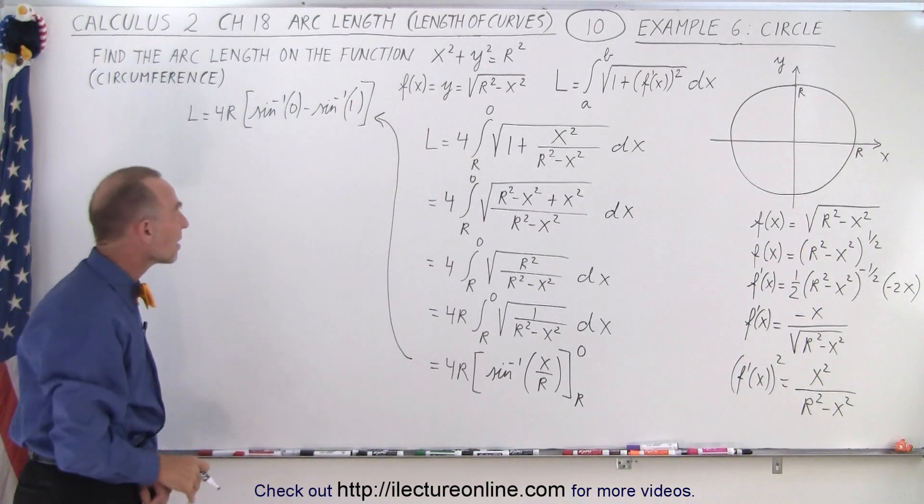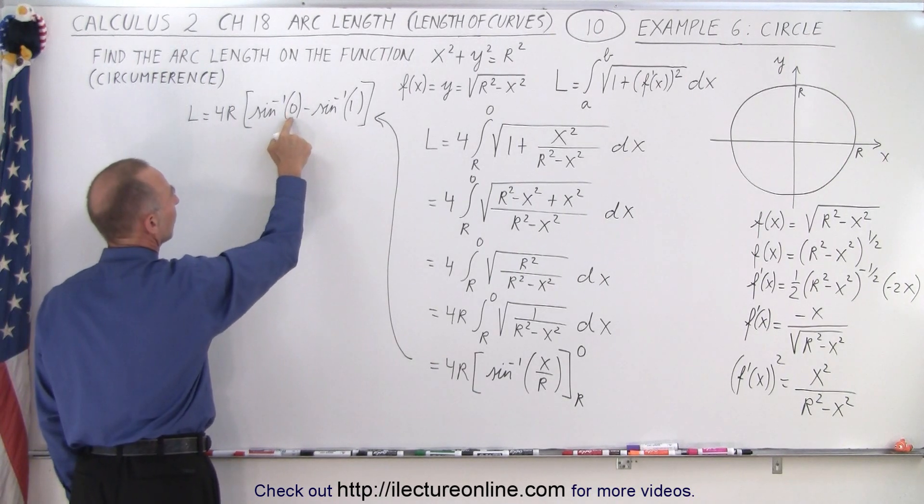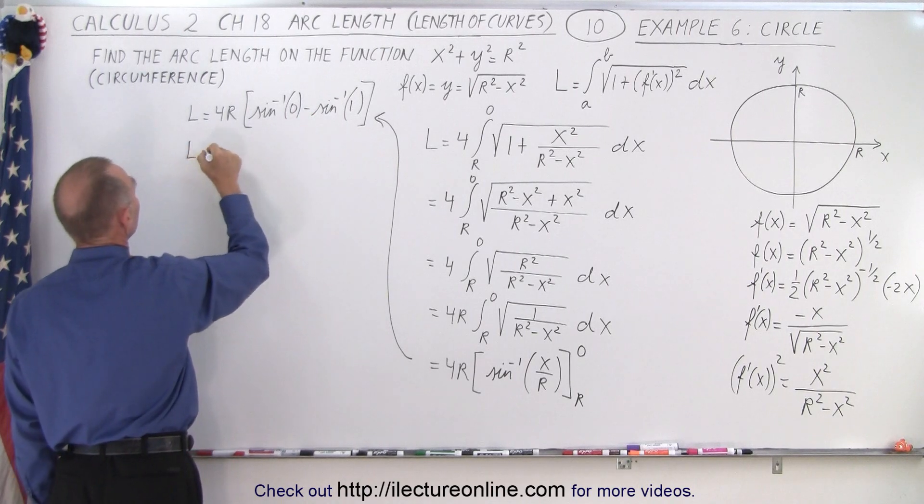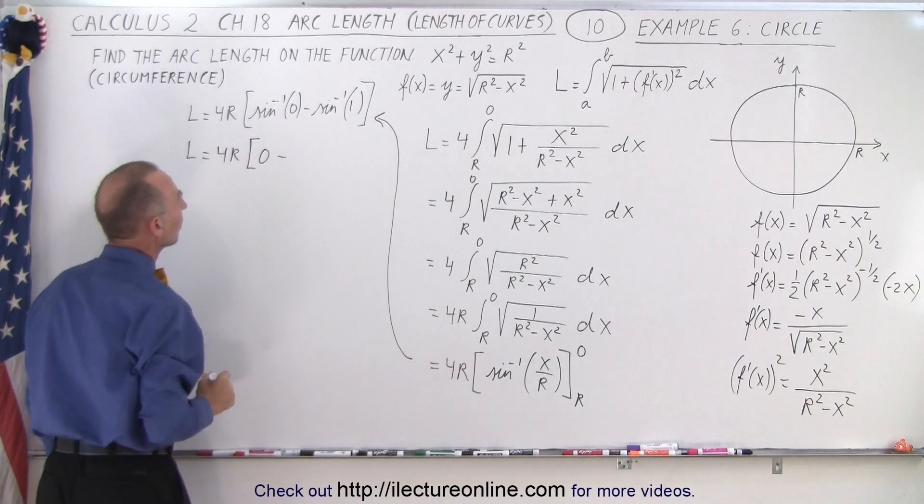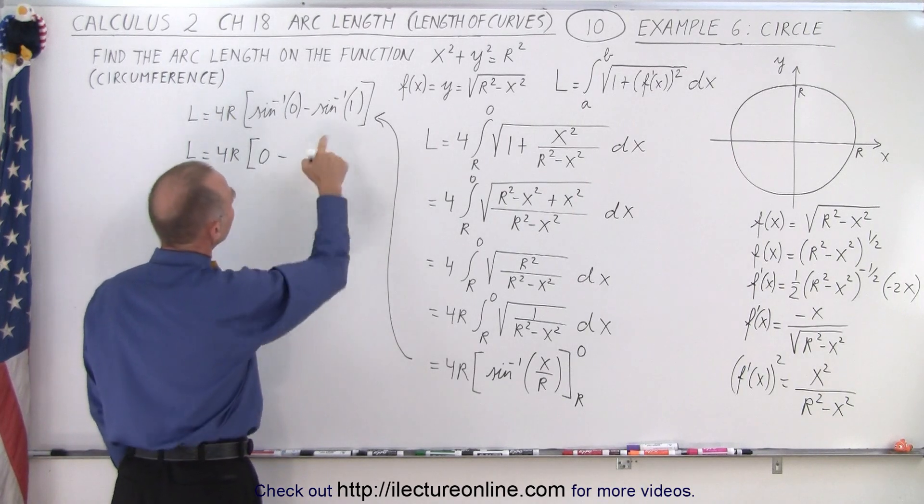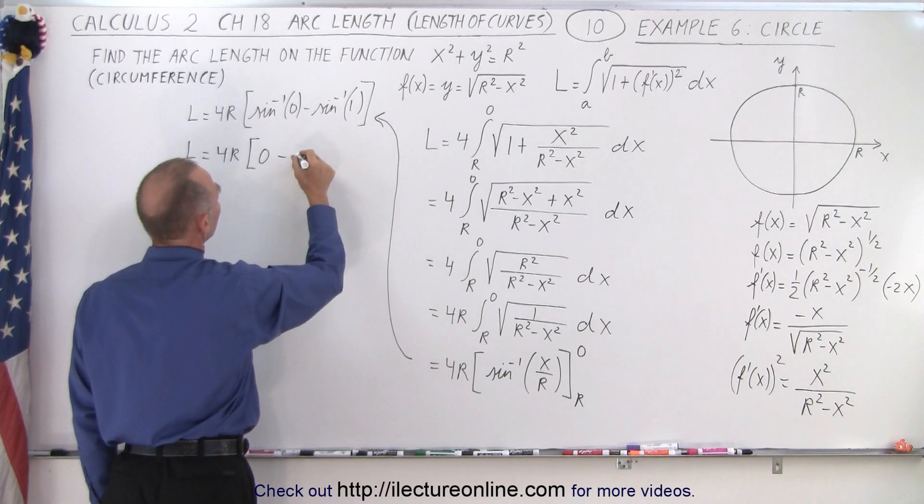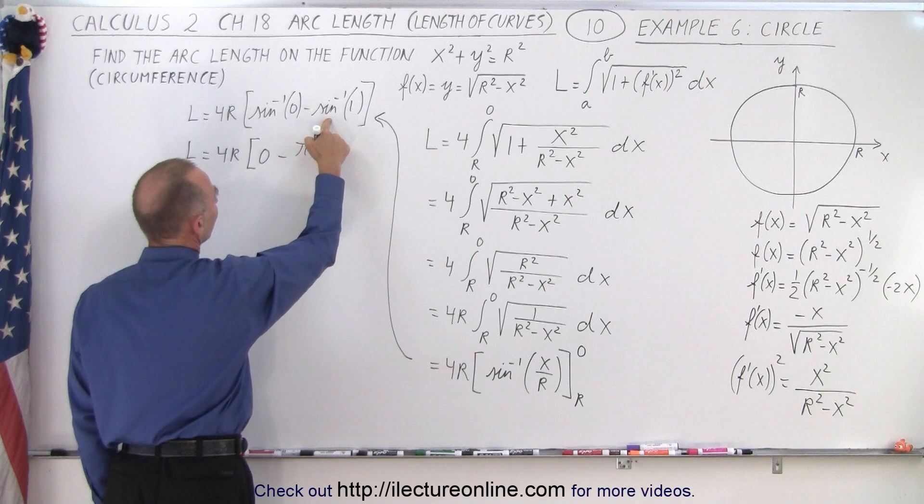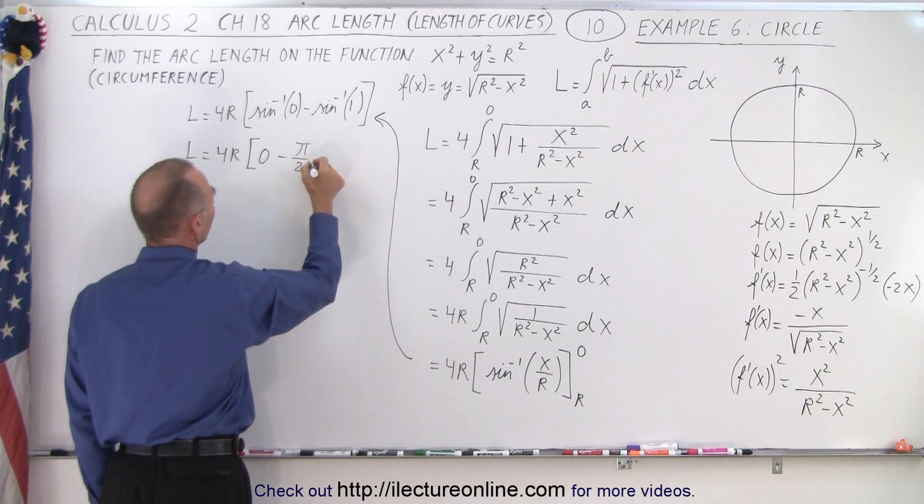Okay, so when is the inverse sine, what's the angle when the inverse sine equal to 0? Well, when sine equals 0, that means the angle is 0. So L equals 4r times 0 minus, and then here, when the sine is equal to 1, well, that's equal to π. So it looks like π/2, right? That's 90 degrees, when the angle is 90 degrees, the sine is equal to 1. So it would be π/2.